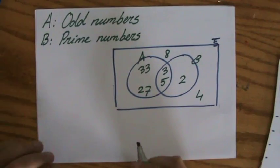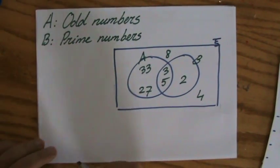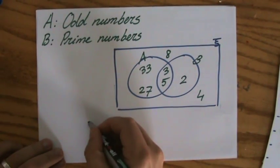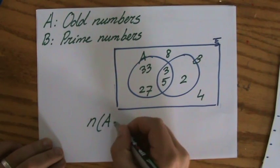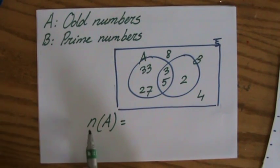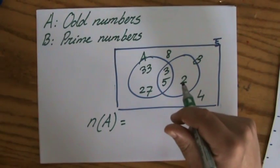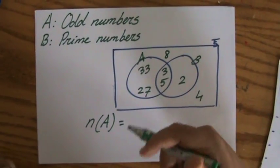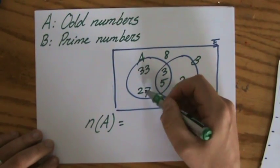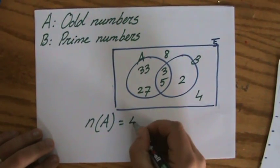Now, the first notation you should be familiar with is this one. And this means the number of elements in set A. And the answer to that is how many pieces of information, how many elements do I have in set A? I have one, two, three, four of them. So the answer is four.